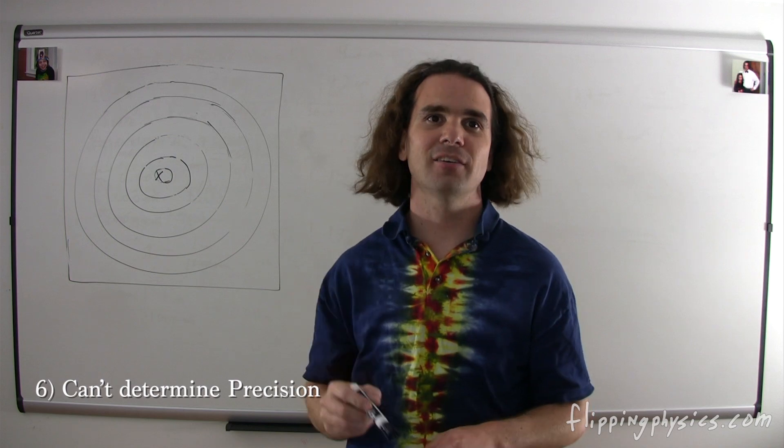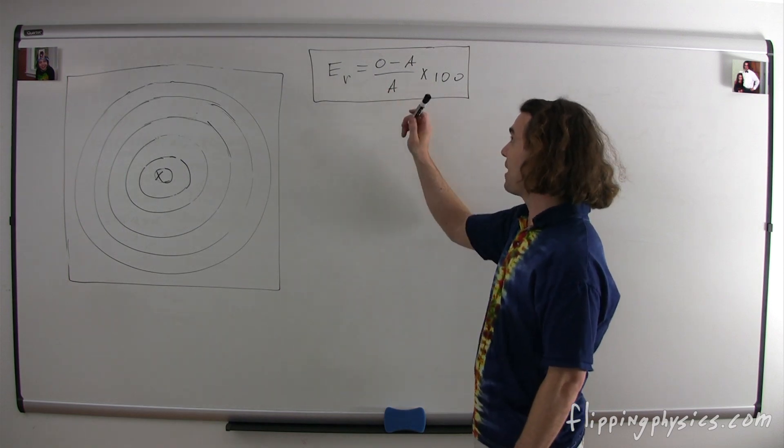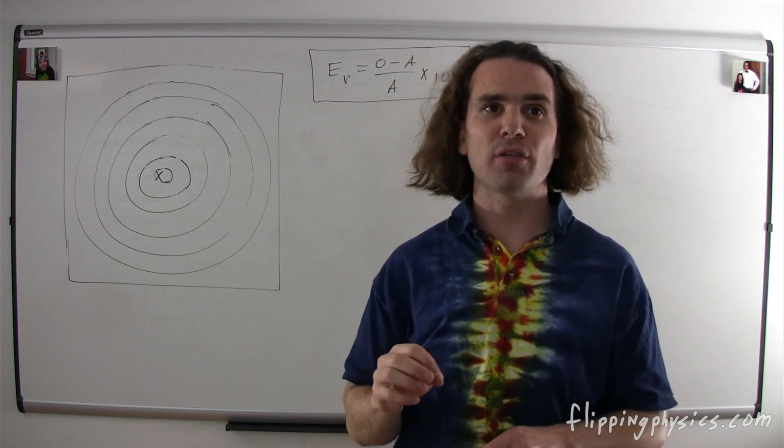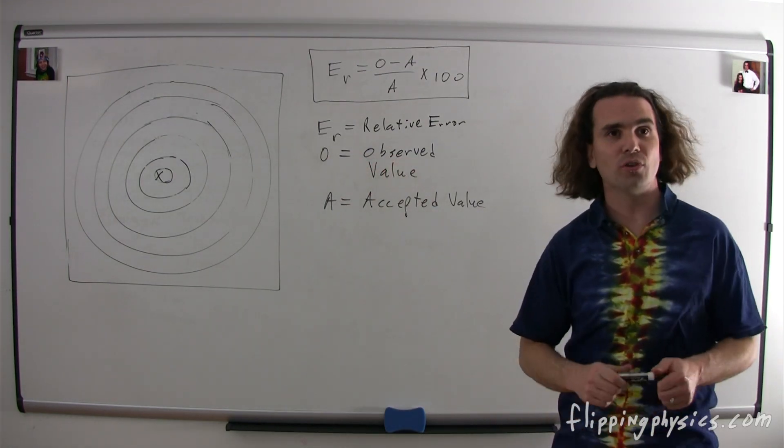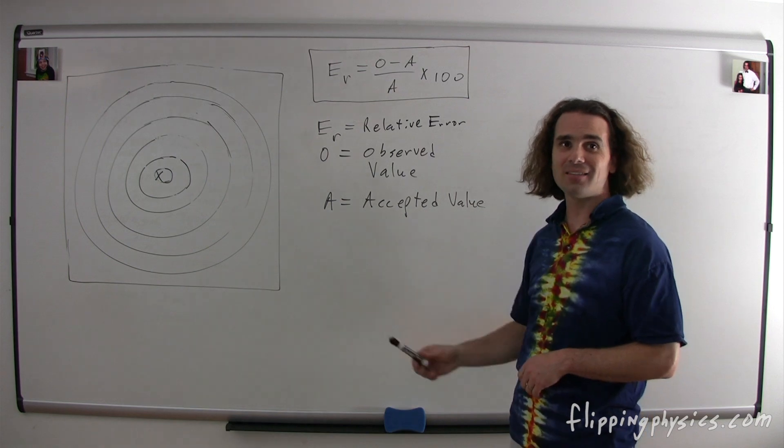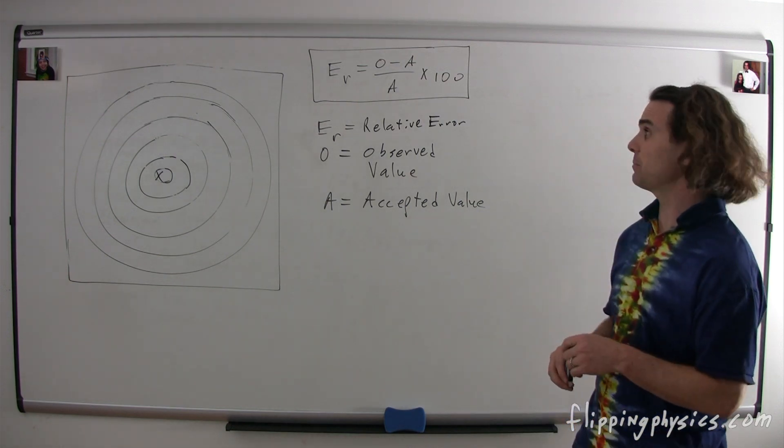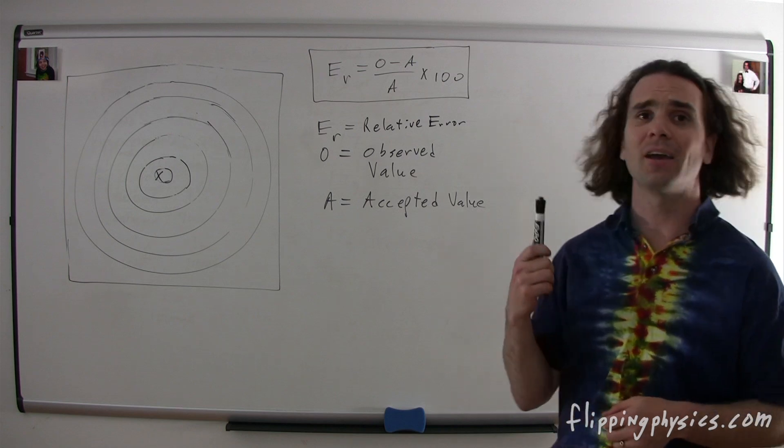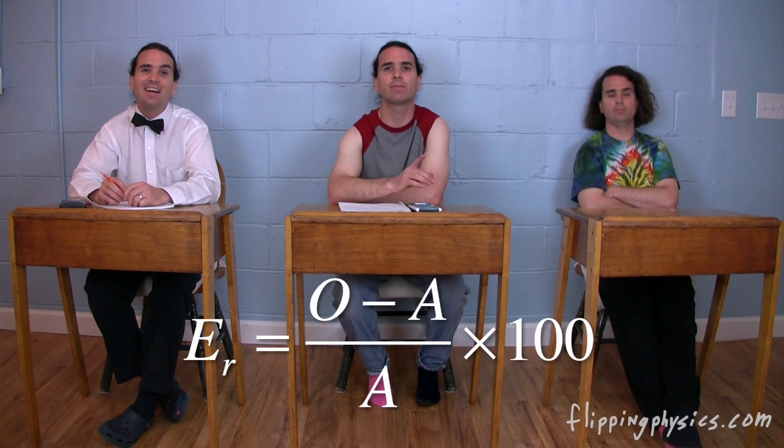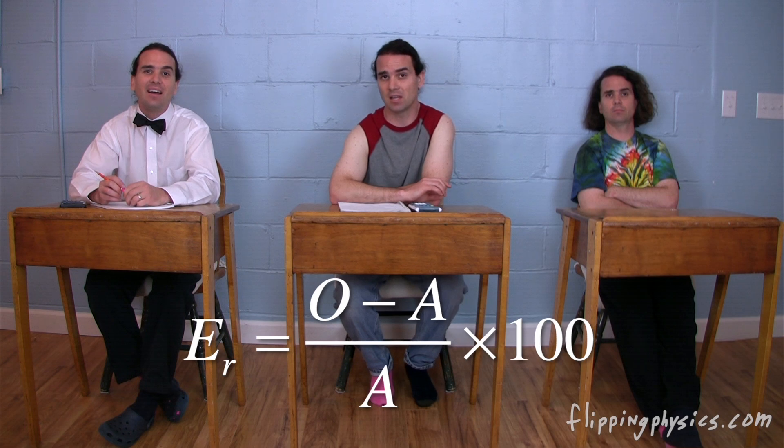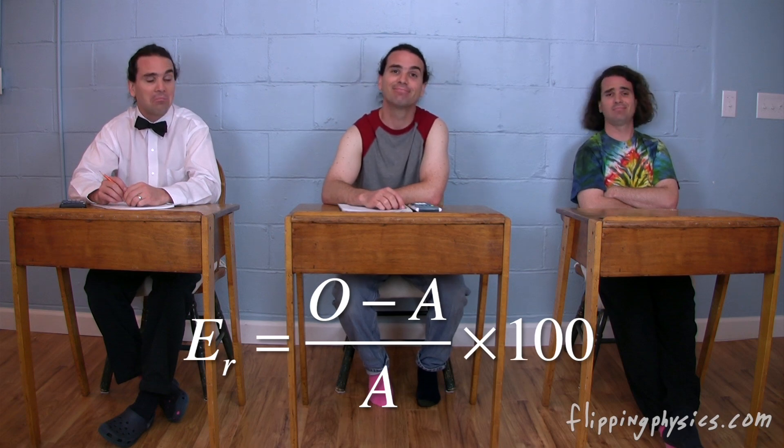Now it is time for our first equation of the class. Here it is. First, I'm going to read it with just the letters. So E sub r is equal to O minus A divided by A times 100. Now I'm going to actually walk my way through what all of this means. E sub r is called the relative error. O is the observed value and A stands for the accepted value. In other words, we can read this equation as the relative error is equal to the observed value minus the accepted value, that quantity divided by the accepted value, the whole thing multiplied by 100. Bobby, is this a measurement of accuracy or precision? How would I know? Oh wait, wait, wait. I think I see. Because the equation has accepted value in it, and precision has nothing to do with the accepted value, it must be a measurement of accuracy. Very nice Bobby. Relative error is a measurement of accuracy.